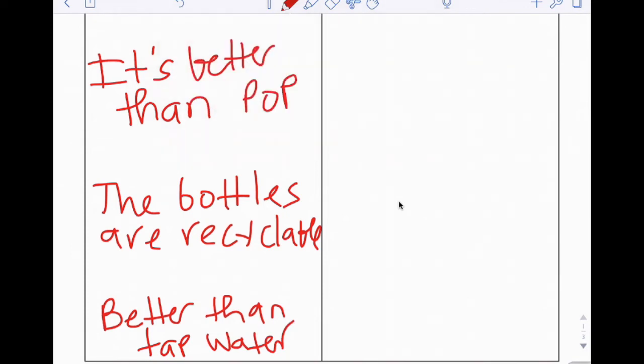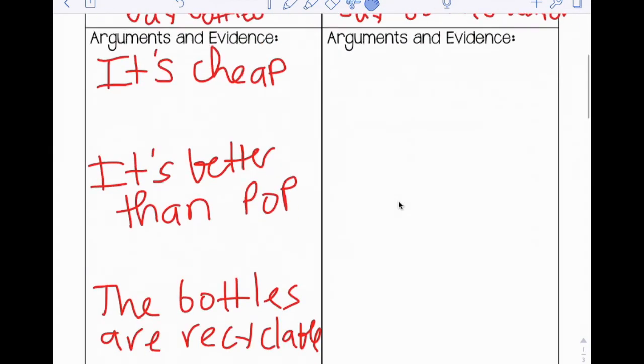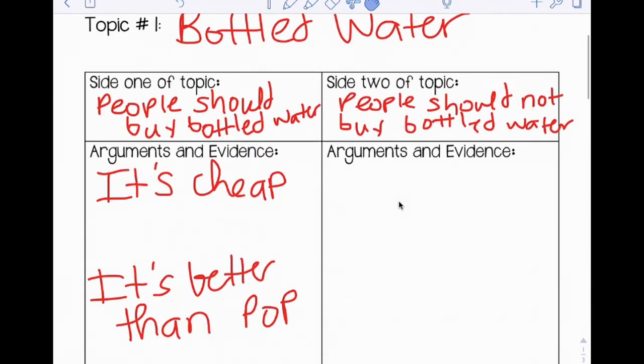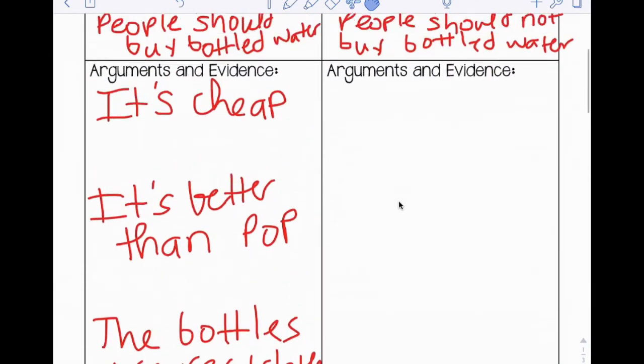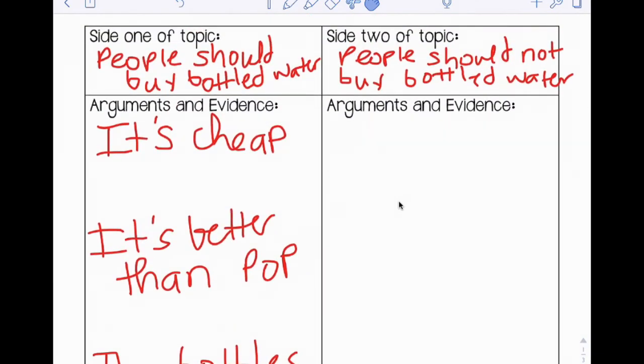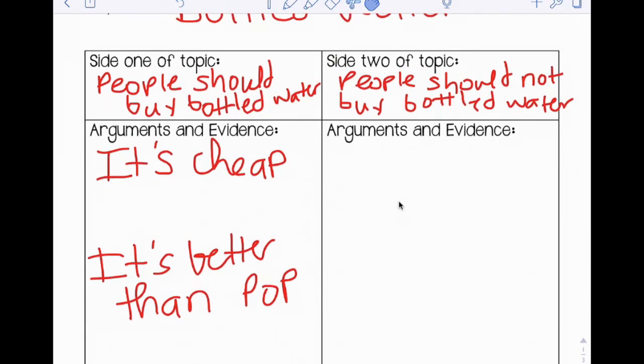Now for each of these four, I need to find one piece of evidence to support it. So I'll have four arguments and four pieces of evidence. I'm gonna go to the internet and find a source, and I'll be right back.